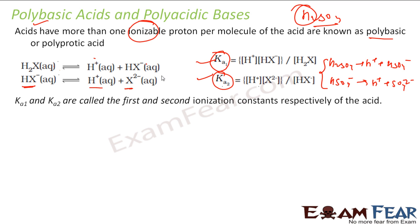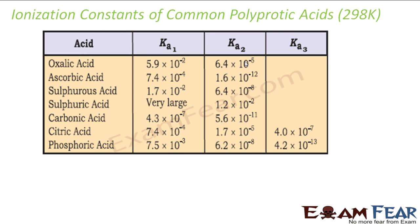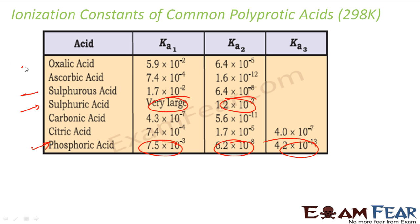K₁ and K₂ are called first and second ionization constants. If the acid has three ionizable protons — for example H₃PO₄ — it will have K₁, K₂, and K₃: first, second, and third ionization constants. There is a table for this. For phosphoric acid there are three constants K₁, K₂, K₃. For sulfuric acid K₁ and K₂. For oxalic acid K₁ and K₂. So it can have K₁, K₂ or K₁, K₂, K₃ depending on the number of ionizable protons.